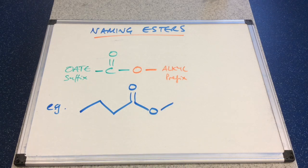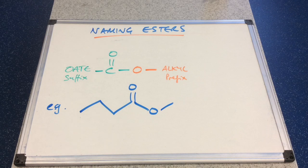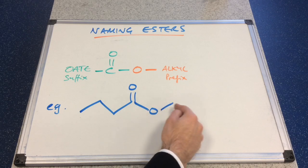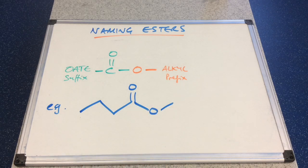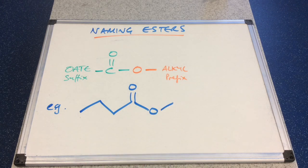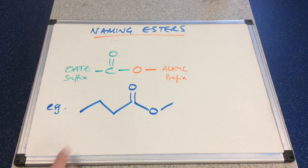So let's just identify the oate part first. We've got 1, 2, 3, 4 carbons in the oate part, so that's butanoate. And in the alkyl part — the bit after the single bonded O — we've got 1 carbon, so we've got a methyl group. The alkyl part is the prefix, so the start of the name. So this ester will start with methyl and its suffix will end with butanoate. So this ester is called methyl butanoate.